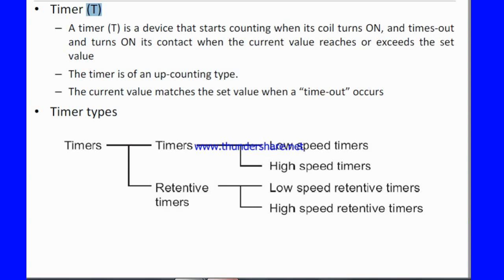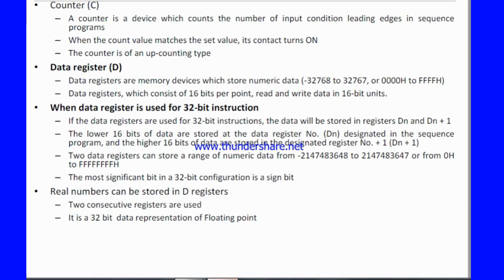I will explain everything during programming in my upcoming video. Another one is counter. We denote the counter with the symbol C. A counter is a device which counts the number of input condition leading edges in a sequence program. When the count value matches the set value, its contacts are activated. The counter is of up-counting type.